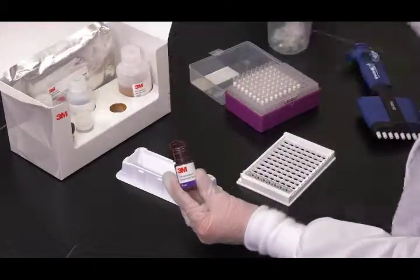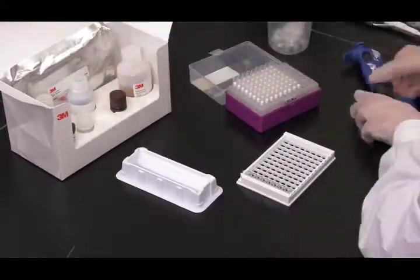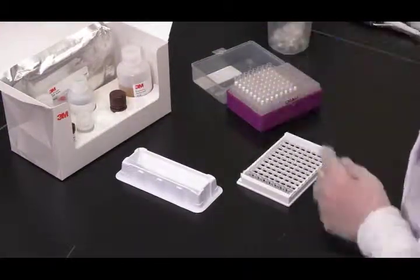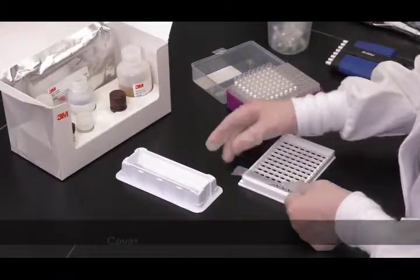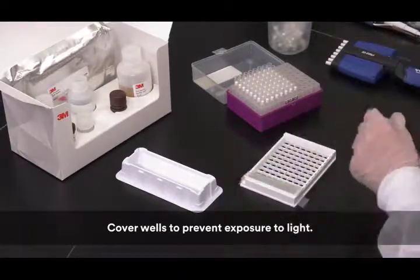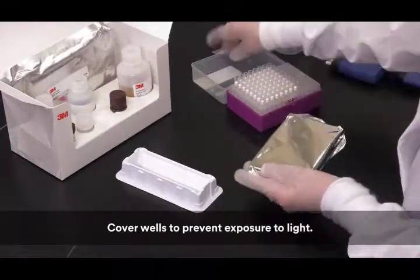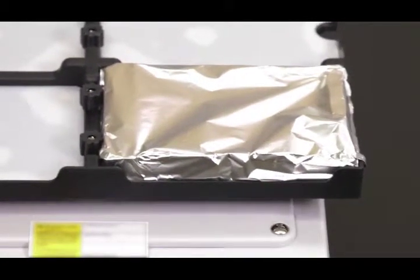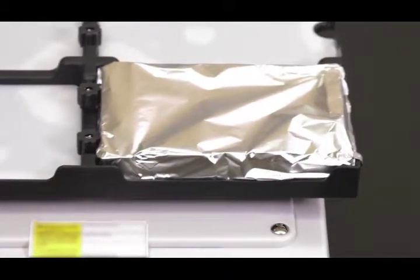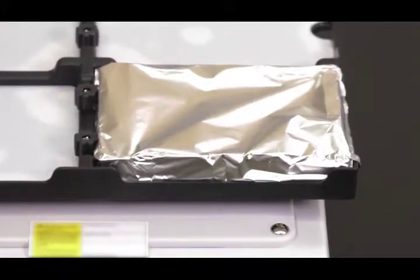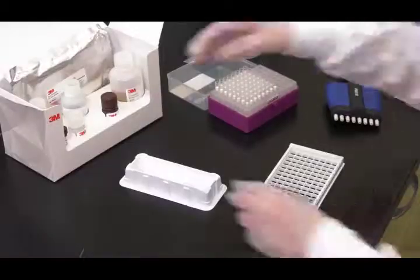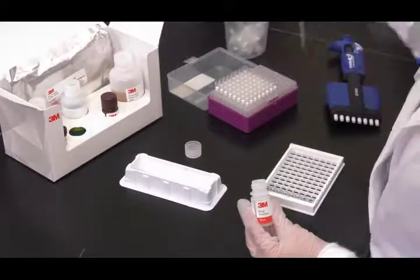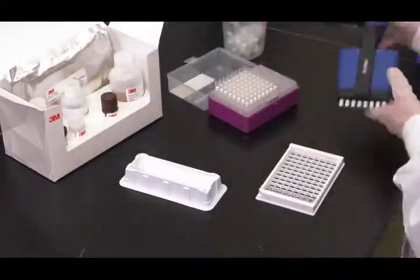Pipette 100 microliters of 3M Chromogenic Substrate Solution into each 3M ELISA well. Incubate on an orbital shaker, again set at 400 rotations per minute at ambient temperature for 10 minutes. After incubation, add 100 microliters of 3M Stop Solution to each 3M ELISA well.